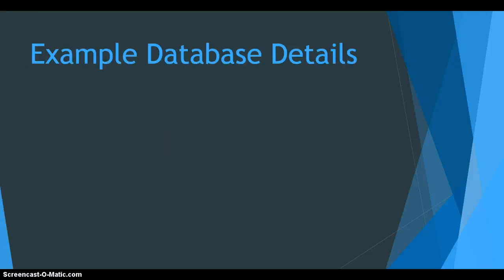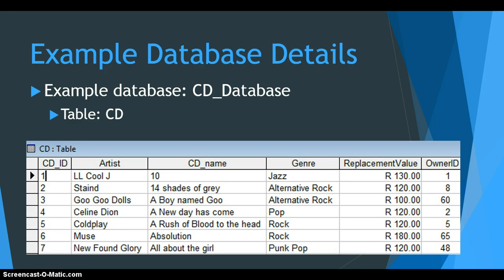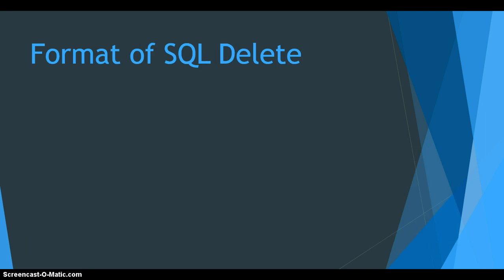Before we go into it, just a reminder about the database we're using. We are using the CD database and specifically the CD table, which has a CD ID as the primary key, the artist, the CD name, the genre, the replacement value, and the owner ID. That owner ID references the owner table to indicate who owns each particular CD.